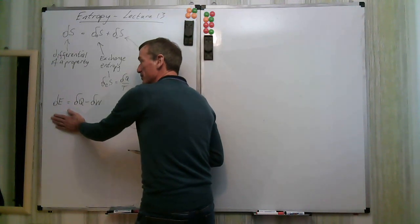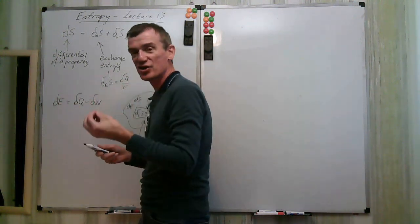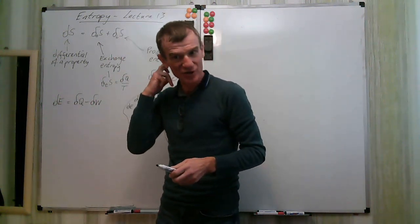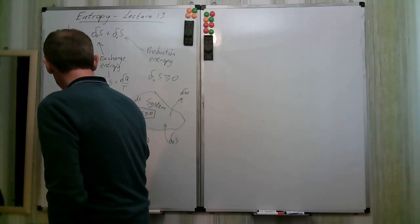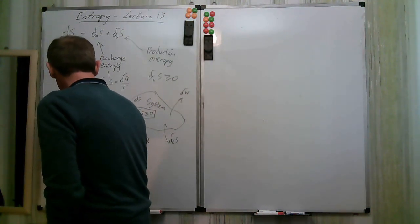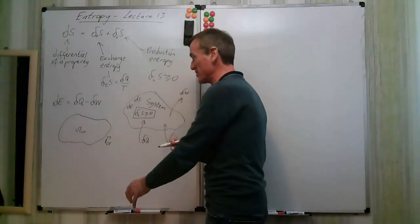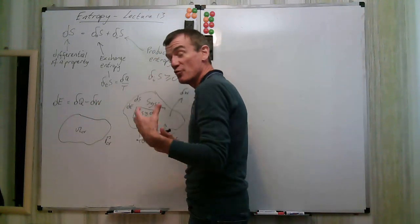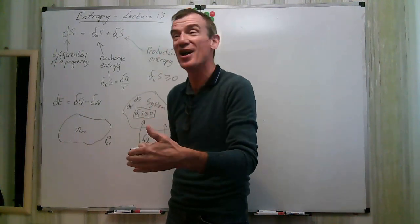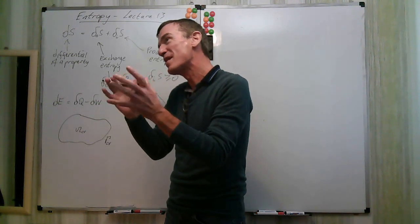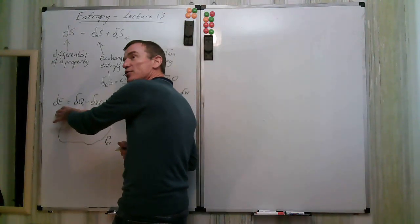Previously we found that we can form transport equations. Rather than a system, we can imagine a control volume — omega_CV with boundary CV. The difference between a system and a control volume is that the control volume is simply a defined region of space; it doesn't care if a system is inside or not. It's a more flexible arrangement.